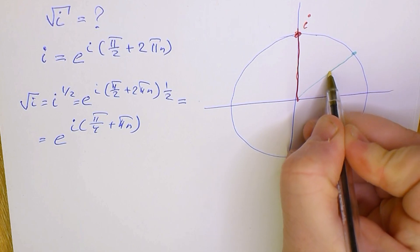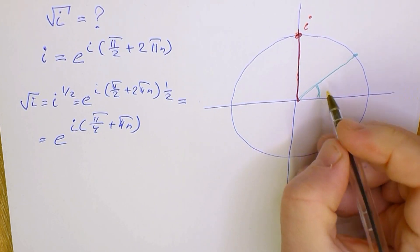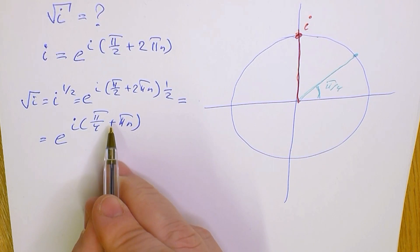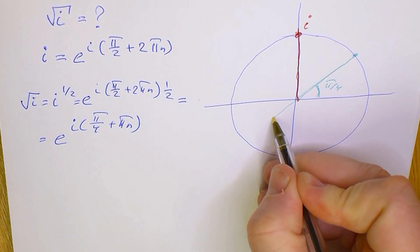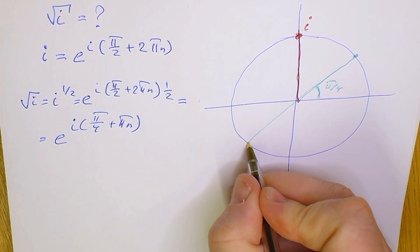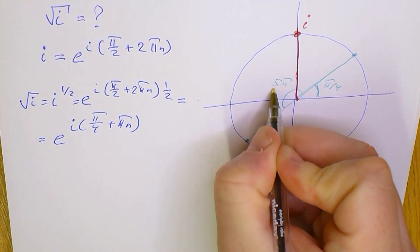So let's draw it. This is pi over 4 and this is the next one, 5 pi over 4.